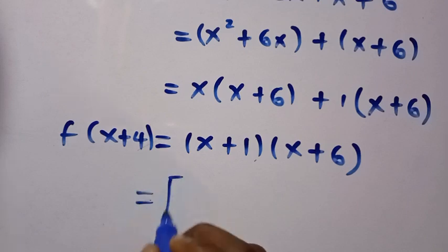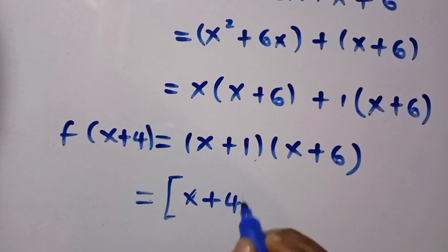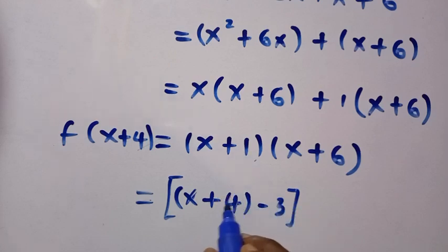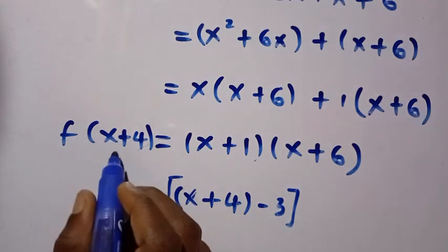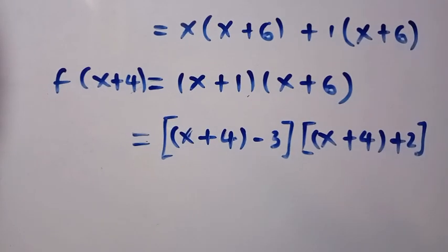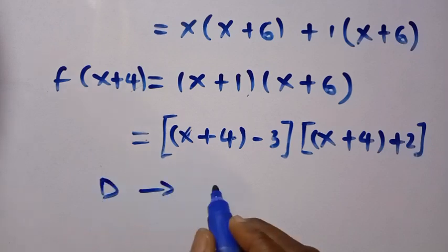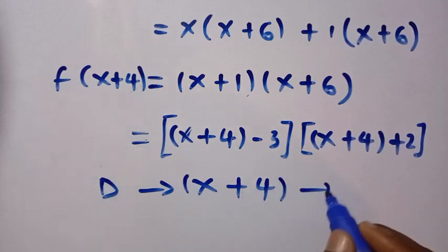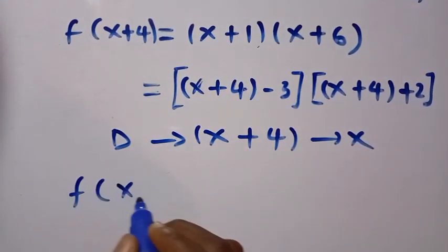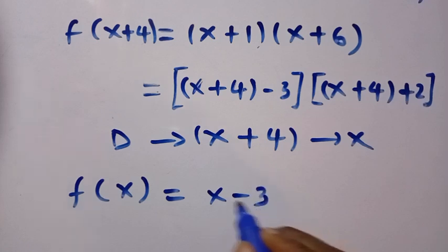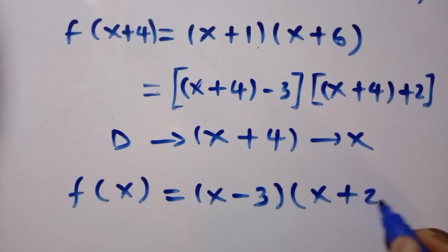We rewrite x+1 as (x+4) minus 3, and x+6 as (x+4) plus 2. So we have f(x+4) = [(x+4) - 3]·[(x+4) + 2]. Since the domain of the function is x+4, we now replace x+4 with x throughout. Therefore f(x) = (x-3)(x+2).